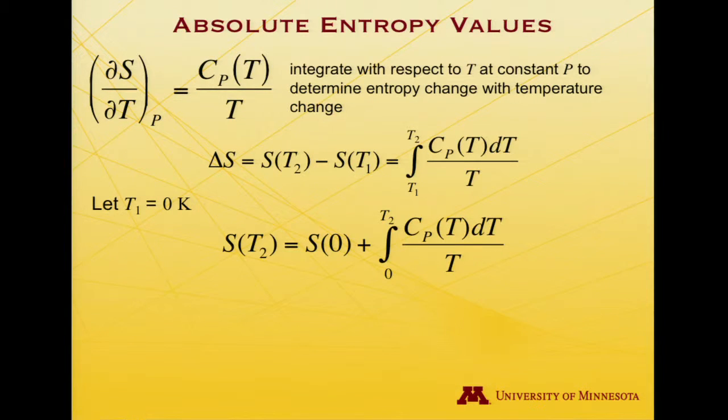And indeed, if we start from 0 Kelvin as T1, that actually gives us a way to express the absolute entropy at a given temperature. It's equal to whatever the entropy is at absolute 0, plus the integral from 0 to that target temperature T2 of Cp(T) dT over T.